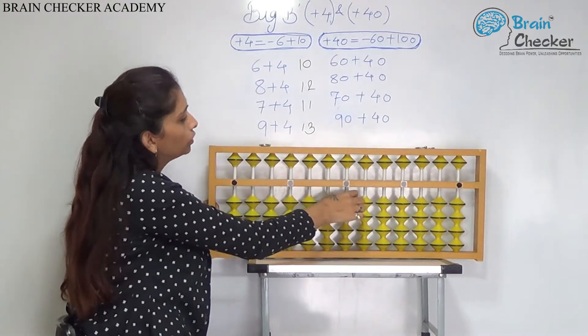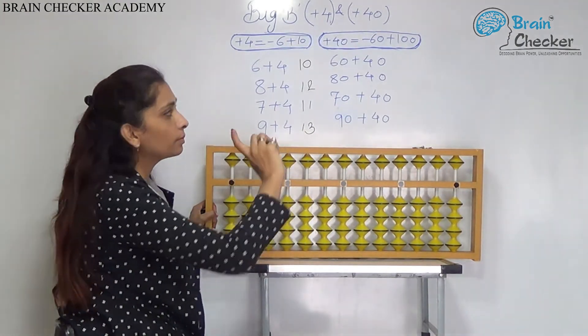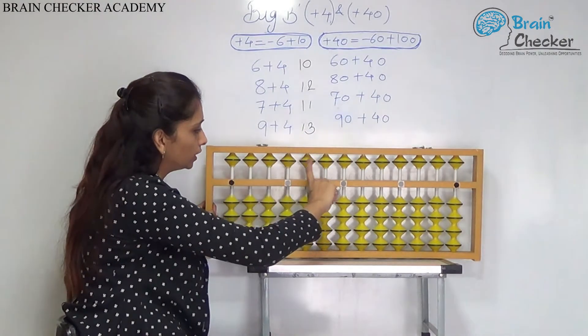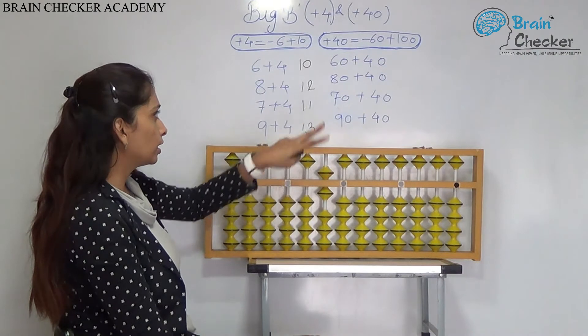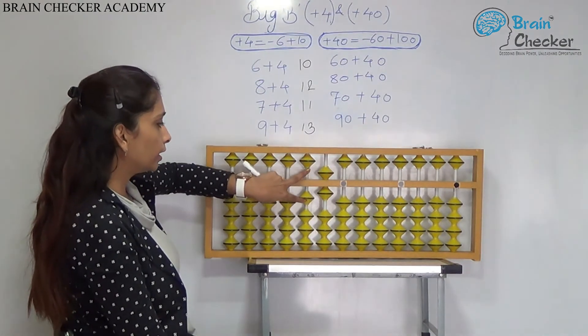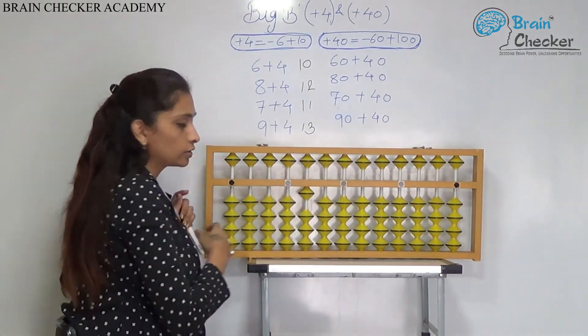Now, how to do it for the 2 digit number or for the 10th rod. The first example is 60 add 40. We will take the 60 first. 50, 60 add 40. Add 100 less 60. So, the answer is 100.